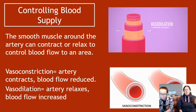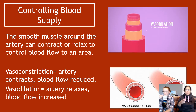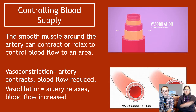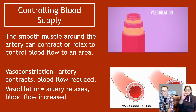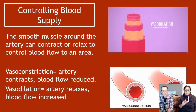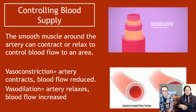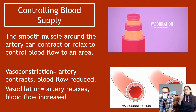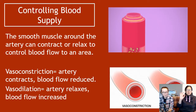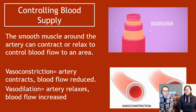Because there is smooth muscle around the arteries, that smooth muscle can contract and relax. When it contracts, it makes the lumen really small, so you get less blood flow through. When it relaxes, the lumen becomes quite big and lets more blood through. The term for this is vasoconstriction — the artery constricts, it contracts, and blood flow is reduced. Vasodilation is when the artery relaxes and blood flow is increased.